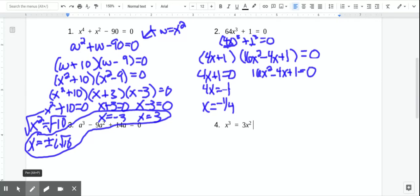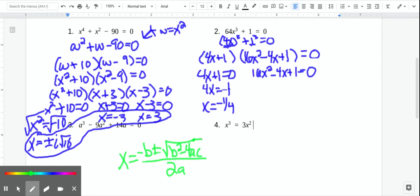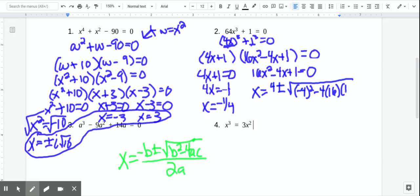We cannot factor that one anymore, but it's a quadratic, so we can use the quadratic formula. The quadratic formula, if you need to see it again, is I'm going to write it down here. So we get X equals negative B plus or minus the square root of B squared minus 4AC all over 2A. So we get X equals negative B, so it's the opposite of B. So it'll be 4 plus or minus the square root of negative 4 squared minus 4 times 16 times 1 all over 2 times 16.